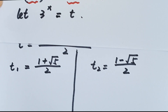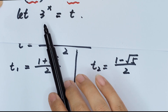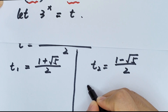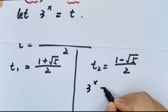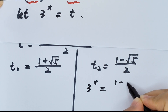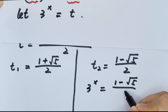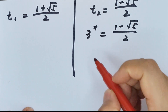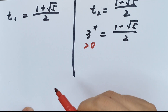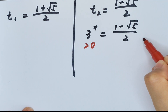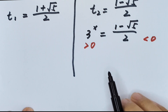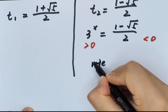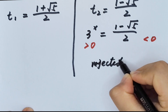Recall we let 3 to the power of x equal t. If t equals (1 minus square root of 5) / 2, the left side is greater than 0 but the right side is less than 0, so this answer is rejected.